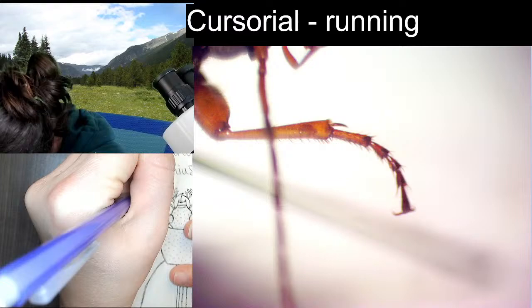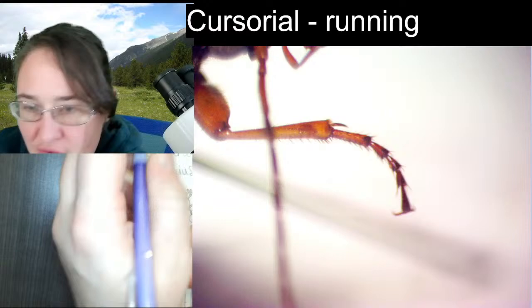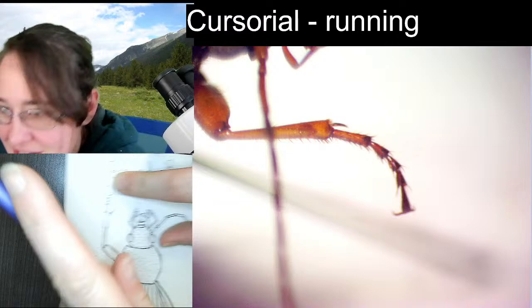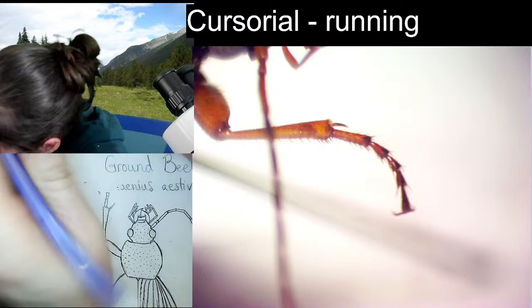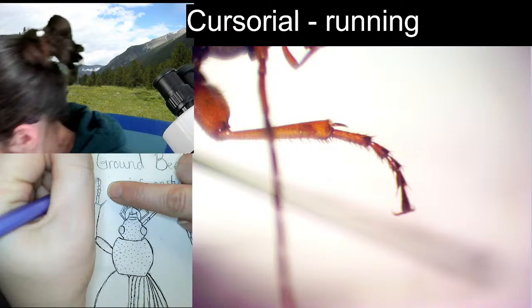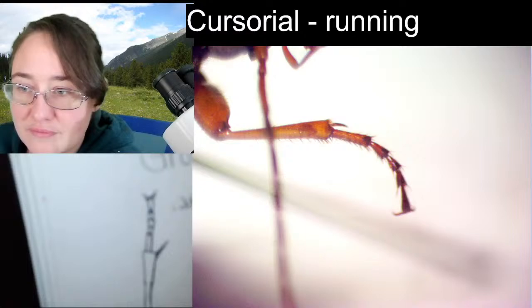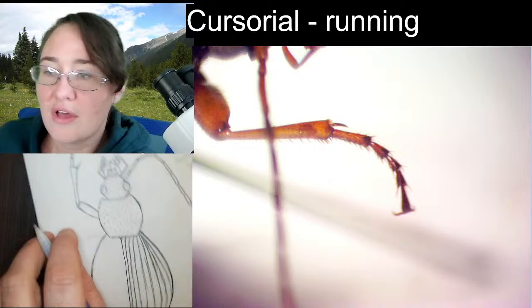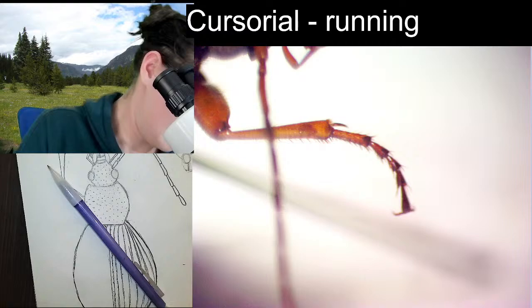The first tarsal segment is what I would consider a rectangular segment, and then we're going to have three triangular segments, and then that last segment is kind of a raindrop — narrow at the base, round, raindroppy. You do get two tarsal claws up at the top. That's our front leg, our proleg. Then we're going to go down to the middle leg.